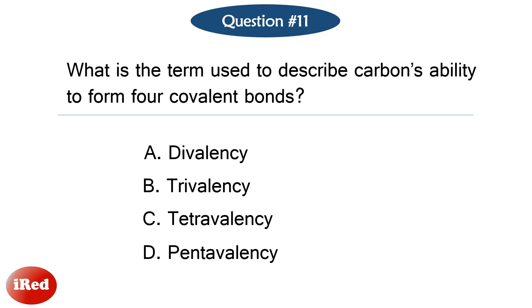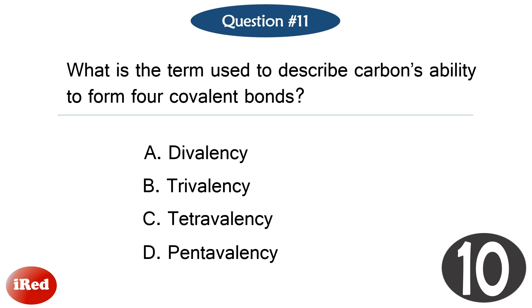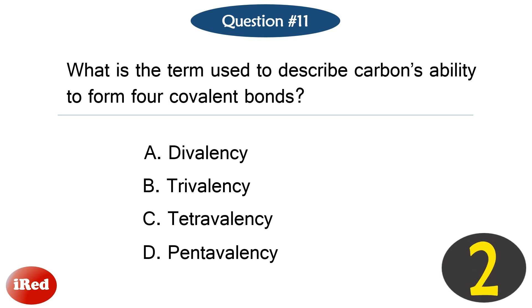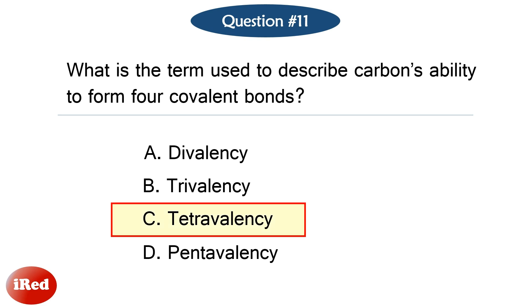Question number 11: What is the term used to describe carbon's ability to form four covalent bonds? The correct answer is letter C, tetravalency.